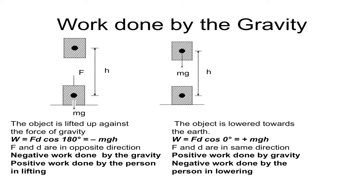Let's look at the work done by gravity. Taking a mass lifted through a height h to a point P at height h above the ground — the object is lifted against the force of gravity. Therefore it is F·D·cos 180°, because F and D are in opposite directions. The force of gravity mg acts downward and the object is lifted upward. Therefore θ = 180° and the work done equals −mgh. We get a negative work done by gravity, while positive work is done by the person, since the person lifts the object in the same direction as the applied force.